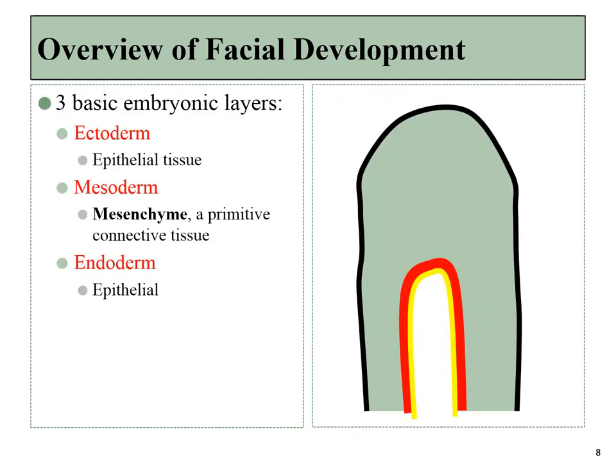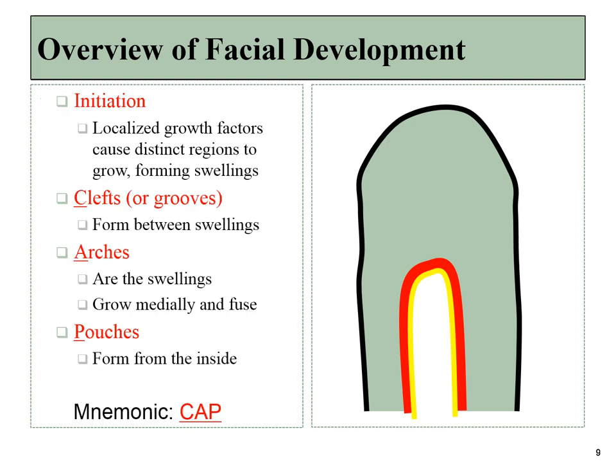In the middle we'll have the frontonasal process, which will form the nose. These prominences are specializations of our three basic tissue types: the outer ectoderm, the middle mesoderm, and the inner endoderm. Growth factors will be released, causing some of these tissues to grow, forming swellings that we can give names to.